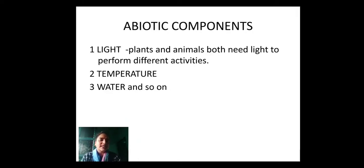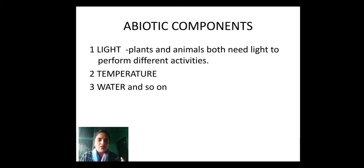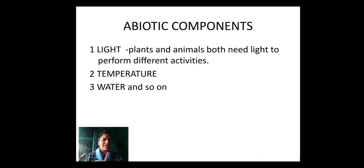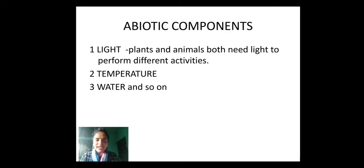Plants and animals both need light to perform different activities. Plants and animals are biotic components and both need light. For example, plants need light to perform photosynthesis — plants cannot perform photosynthesis in the absence of light. In the same way, for animals — let's take our own example — we prepare vitamin D in our body in the presence of sunlight. We are not getting vitamin D directly from sunlight; it is our own body that prepares vitamin D in the presence of sunlight.